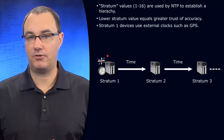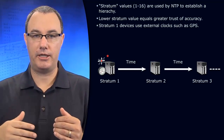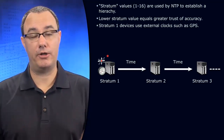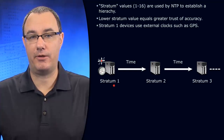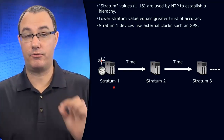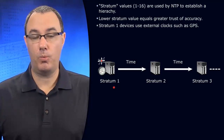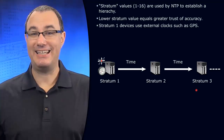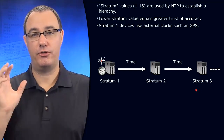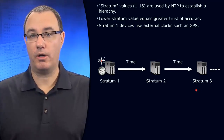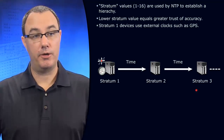It's almost like administrative distance — lower values are more trustworthy. EIGRP is more trustworthy than RIP because it has a lower value. This stratum level system works like a hop count system. We wouldn't want to build stratum one, two, or three internally and claim a really accurate time source. A good rule of thumb is to start no lower than five when building your own time source, since it's generally not going to be an atomic clock.